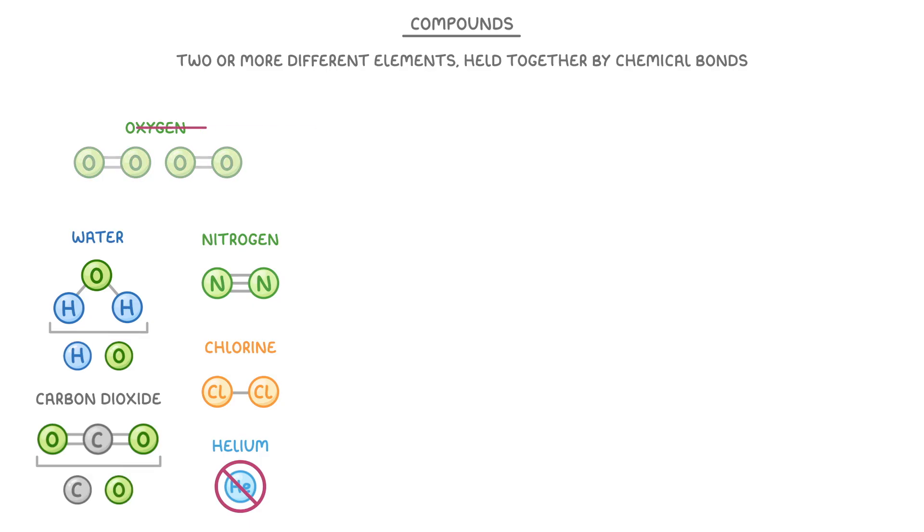However, molecules like oxygen, chlorine, and nitrogen aren't compounds because they only contain one type of element.